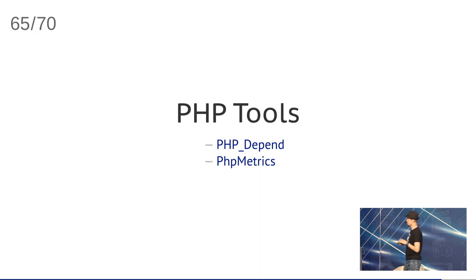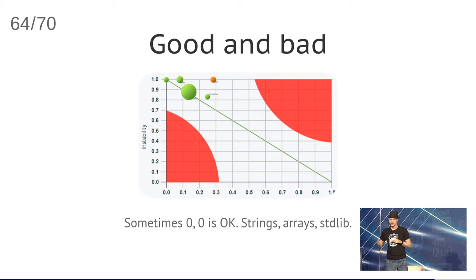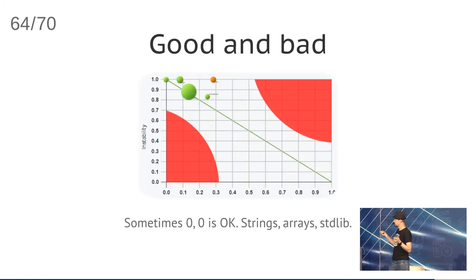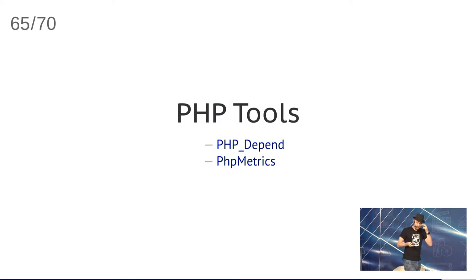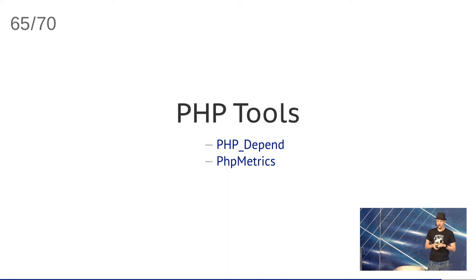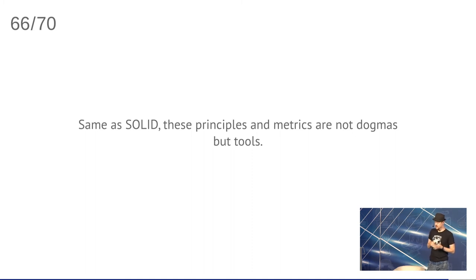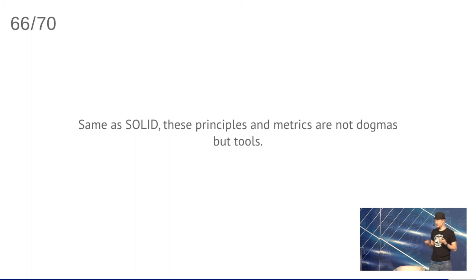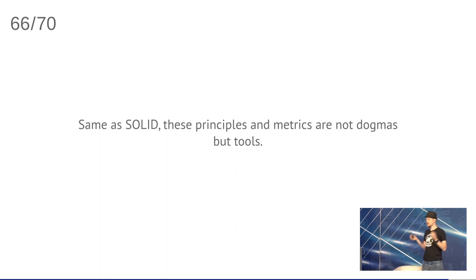There are PHP tools that can visualize this, except they don't draw the red areas — those I drew in Photoshop. The tools are PHP Depend and PHP Metrics. PHP Depend was recently picked up by someone and developed further after being in an abandoned state for about a year. Same as SOLID, these principles and metrics are not dogmatic — they're just tools. If you need to build something really stable, draw these graphs, check for cycles, check the metrics, draw the main line, and check that your packages are close to it.